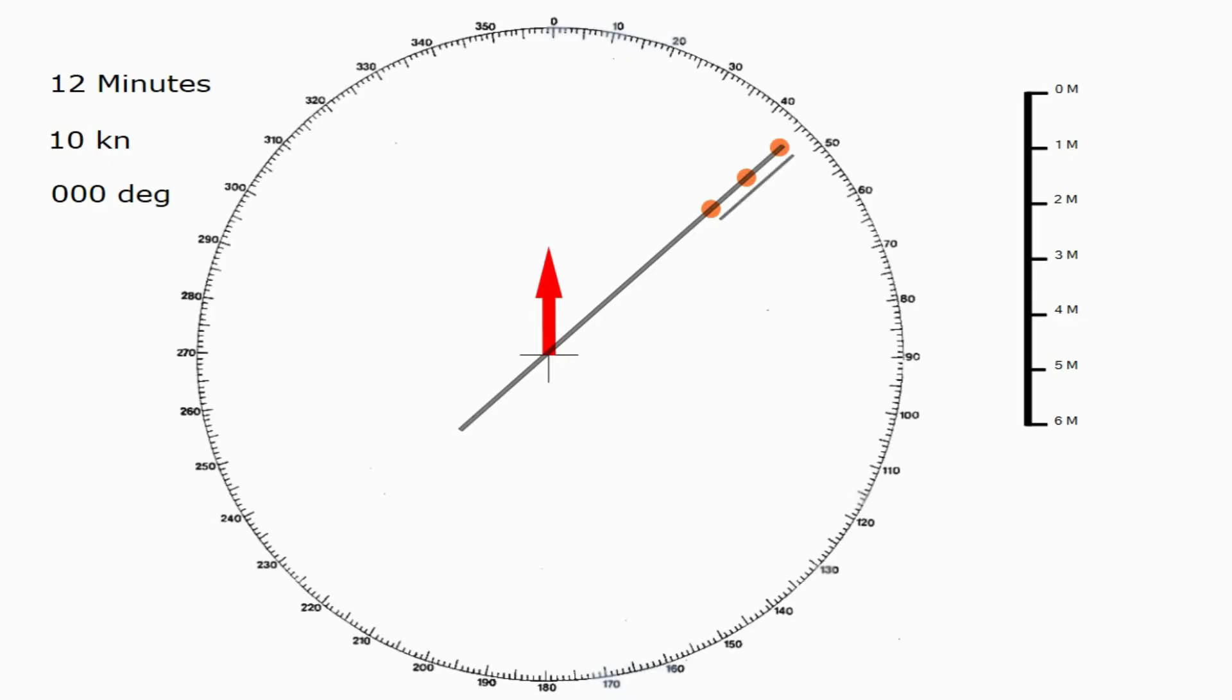Now, to find out how long until that collision, we need to measure a couple of distances. This first distance here, we need to find out how far the target vessel has travelled in the 12 minutes we've been plotting it. All we do, transpose that onto the scale, and we see in the last 12 minutes, the target vessel has moved 1.5 miles relative to us.